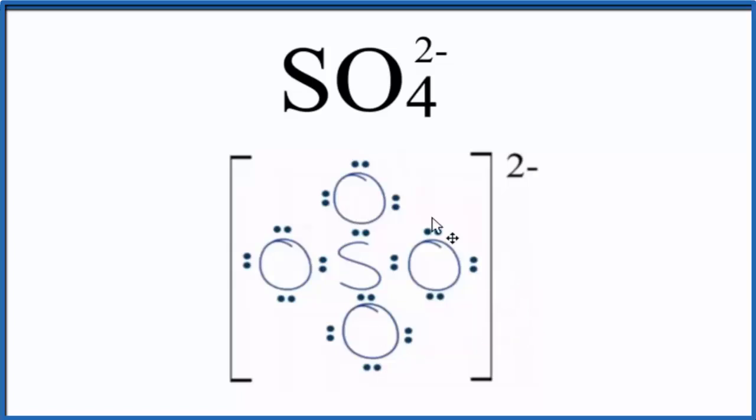We've used all the valence electrons. Each oxygen has an octet. Sulfur has an octet. This looks like a pretty good Lewis structure. But since we have sulfur, we should check the formal charges. That's the tool we're going to use to figure out if we need an expanded octet. So whenever I see sulfur, I start thinking about formal charges.